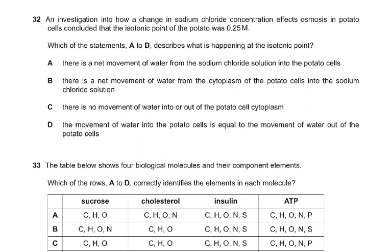Question number 32: an investigation into how a change in sodium chloride concentration affects osmosis in potato cells concluded that the isotonic point of the potato was 0.25 M. Which of the statements A to D describes what is happening at the isotonic point? At the isotonic point, inside and outside concentrations are the same. The answer is D: the movement of water into the potato is equal to the movement of water out of the potato cells. There is no net movement, but it is stated as equal movement — no net movement.